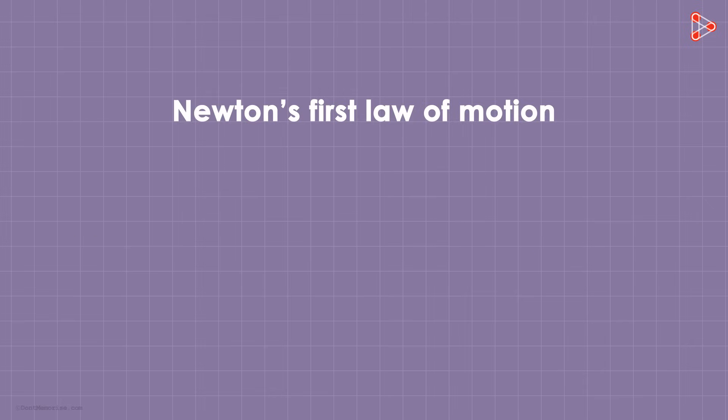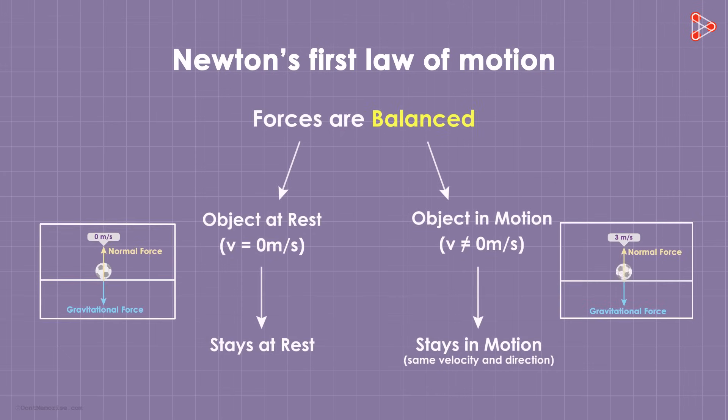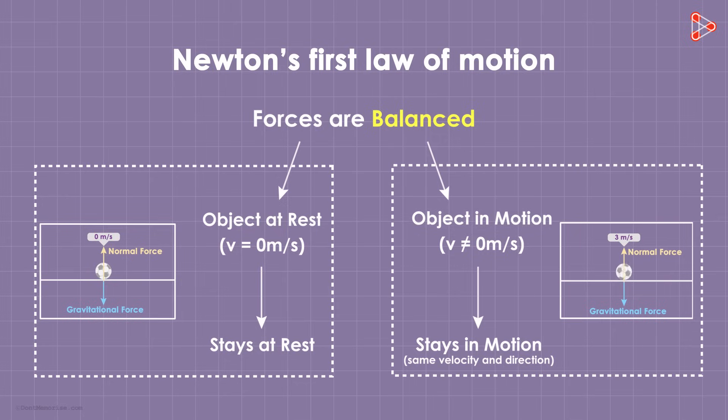Do you remember understanding the first law of motion with a simple diagram? If the forces are balanced, the acceleration will be zero. In the first case, the object will continue to remain at rest, and in the second, the object will continue to stay in motion at the same velocity and in the same direction. Don't forget, these two cases will remain true only if the forces are balanced, only if the net force is zero.